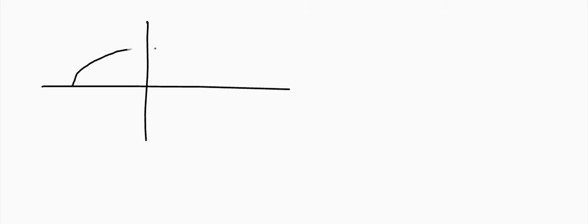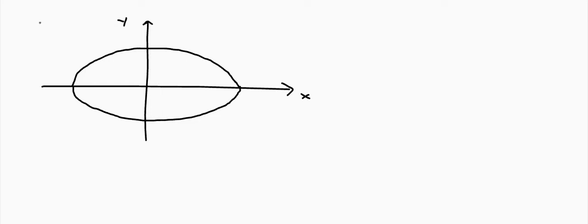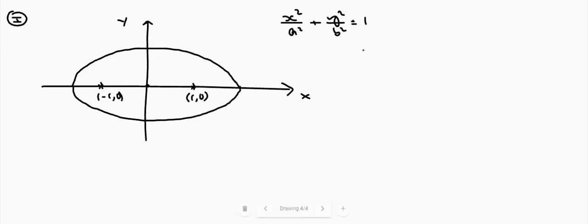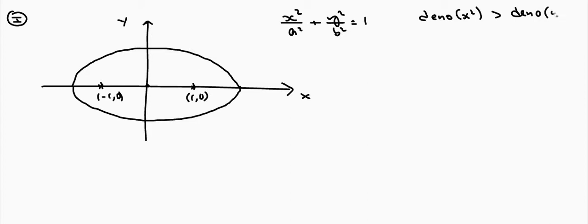There are two types of ellipses. In the first type, the foci lie on the x-axis. The foci are at (c, 0) and (−c, 0). The equation of this type of ellipse is x² / a² + y² / b² = 1, where the denominator of x² is greater than the denominator of y².